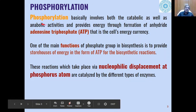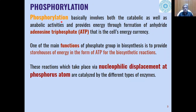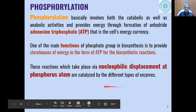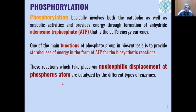The most common example of enzyme-catalyzed reactions is phosphorylation. Phosphorylation involves both catabolic and anabolic activities used for providing energy through formation of ATP, which is called the cell's energy currency. The main function of the phosphate group in biosynthesis is to provide this storehouse of energy in the form of ATP. These phosphorylation reactions generally take place by nucleophilic displacement at the electrophilic phosphorus atom, and different types of enzymes catalyze different types of nucleophilic displacement reactions at the phosphorus atom.